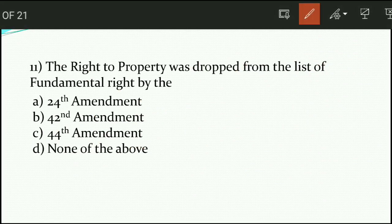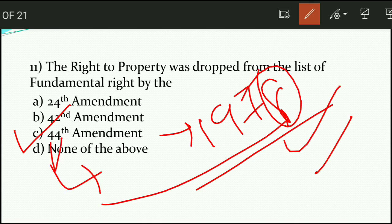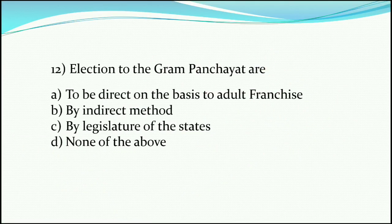Question number eleven: the right to property was dropped from the list of fundamental rights by — option C is the right answer, that is the 44th Amendment, which was passed in 1978. You can remember it as 4+4=8, so 1978. The right to property was removed from fundamental rights and made a legal right under Article 300A.